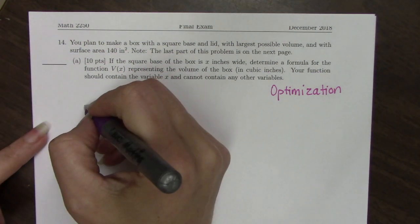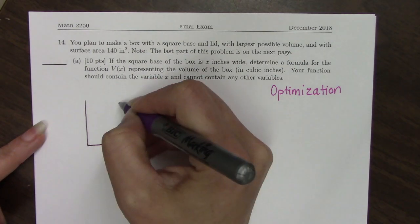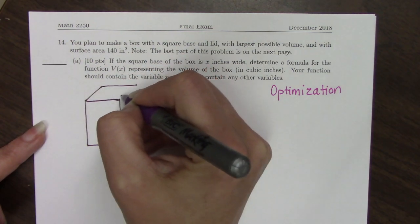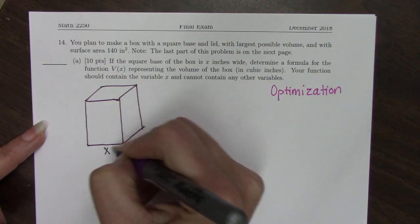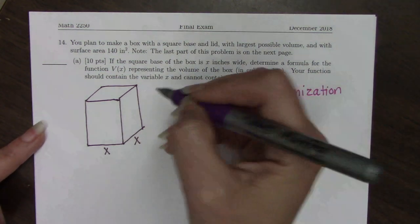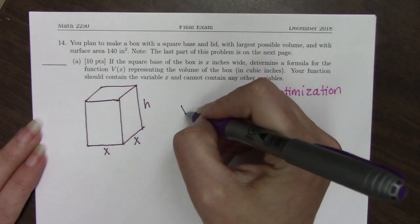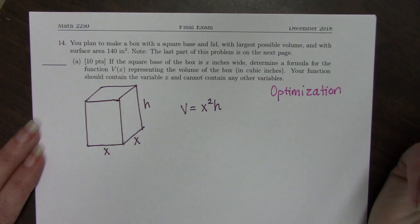The first thing I'm going to do is draw the box in question. This box has a lid and we're told to use the variable x for the base and I'm going to use height. You could also use y for the height but I'm just going to use h. And we know that the volume of this box is x²h.